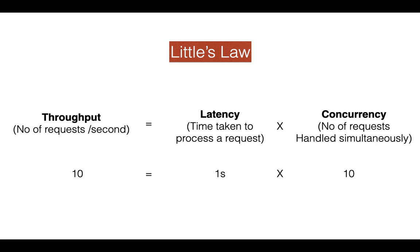Let's say we now need to scale our app — it's getting very popular and we are receiving 100 requests per second. To achieve this throughput, given that our latency is one second, we need to up our concurrency to 100. But we have a limitation in terms of only 10 OS threads being available. So even though we have spare system resources like CPU and memory to handle those additional requests, the limiting factor is the number of OS threads. For the application to keep up, the number of threads must grow as throughput grows.